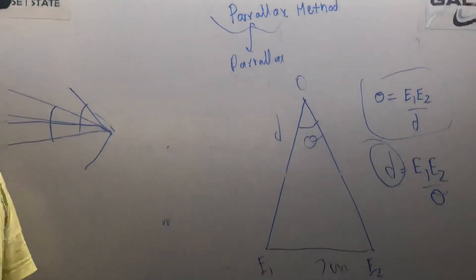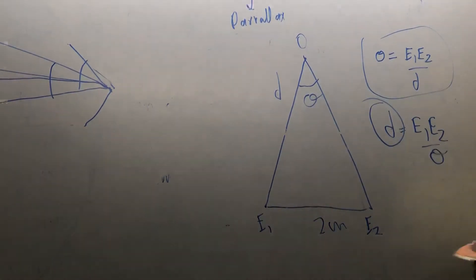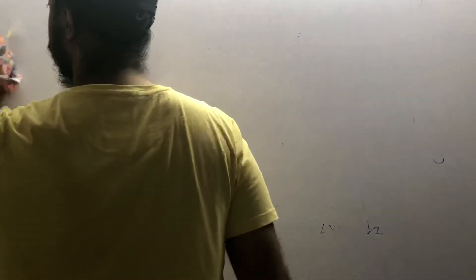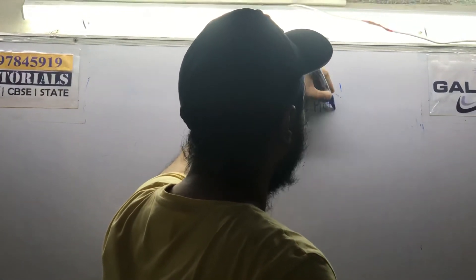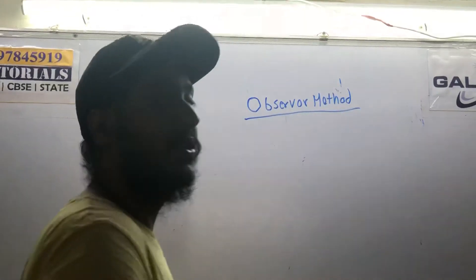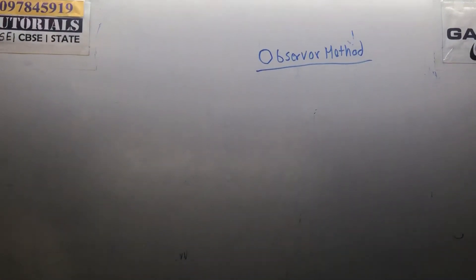In actual practice, to find the distance between stars more accurately, we use what is called the observer method. This is the method actually used to measure distances between stars.